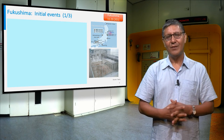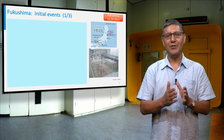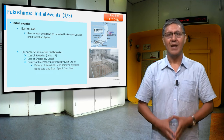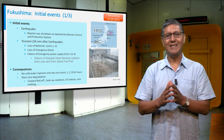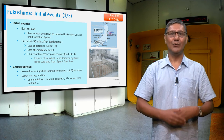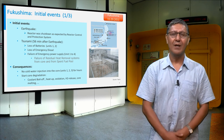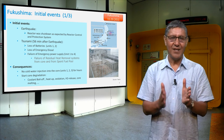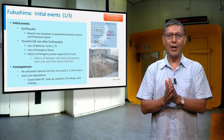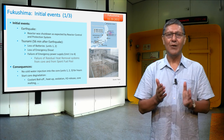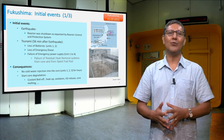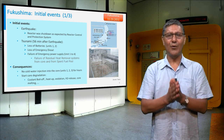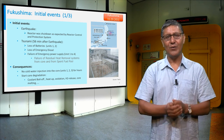The Fukushima accident was initiated by two natural events: an earthquake and the following tsunami. After the earthquake, the safety systems were expected to provide short-term cold coolability. However, the tsunami flooded large areas of the site and took out the residual heat removal systems, which are responsible for long-term cold cooling. Since heat was not being properly removed from the core, it heated up, oxidized, and melted.